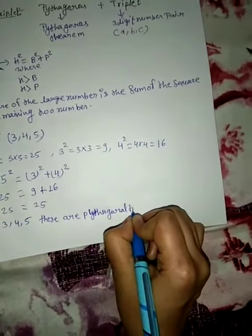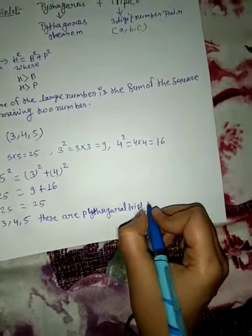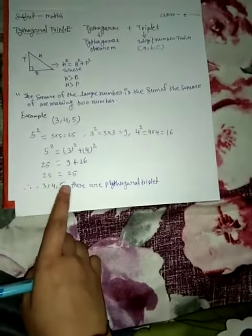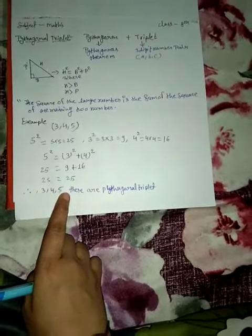If both numbers are different, that means these numbers are not a Pythagorean triplet. Thank you.